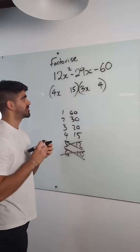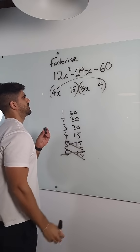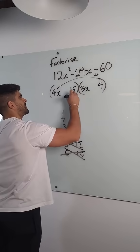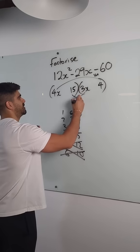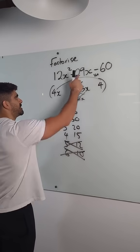We just need to decide the signs. So you do the expansion. 4x times 4 is 16x, and this gives me 45x. How does 16x and 45x make minus 29x?